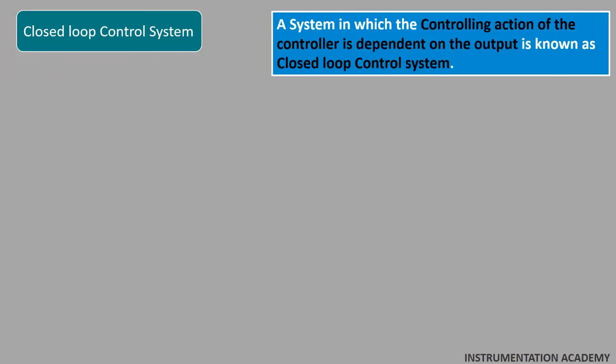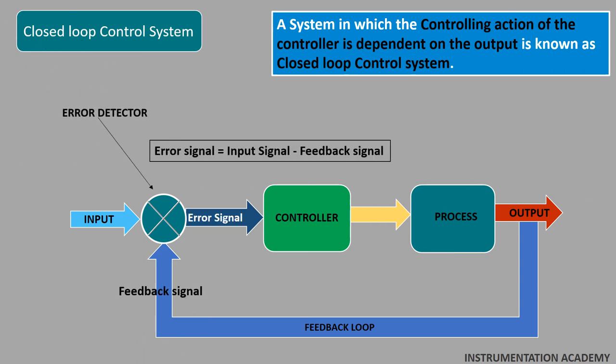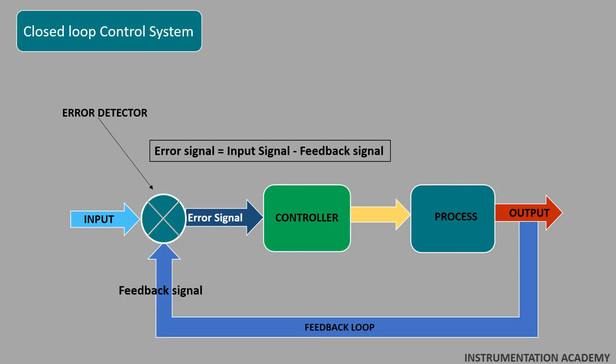Closed loop control system. A system in which the controlling action of the controller is dependent on the output is known as a closed loop control system. This is the block diagram of closed loop control system. This system has an error detector that produces an error signal which is the difference between the input and the feedback signal. This feedback signal is obtained from the output. Instead of direct input, this error signal from the error detector is applied as input to the controller. Now the controller produces the control signal which controls the process.